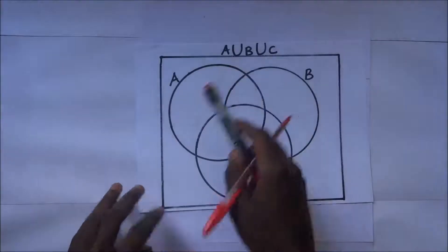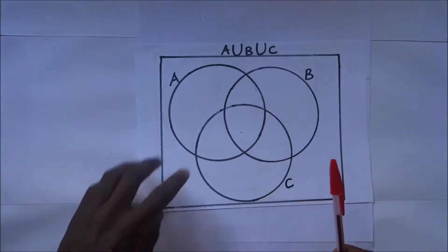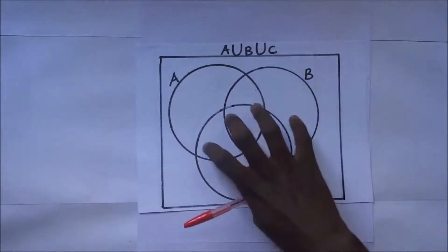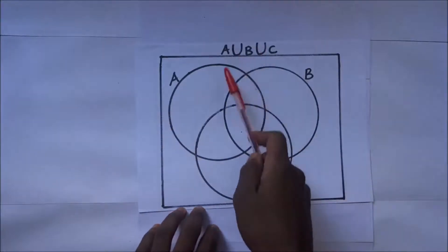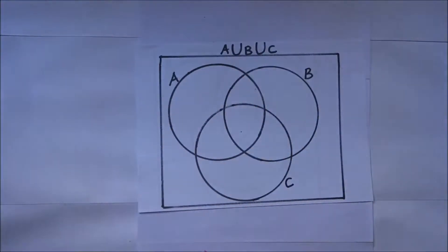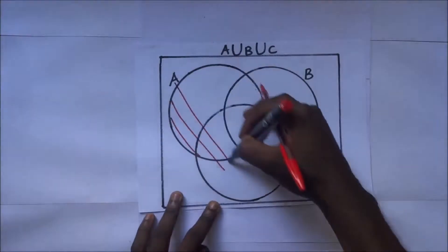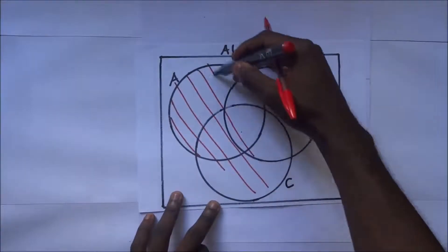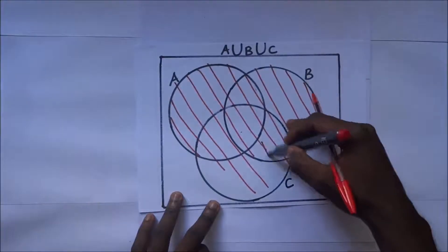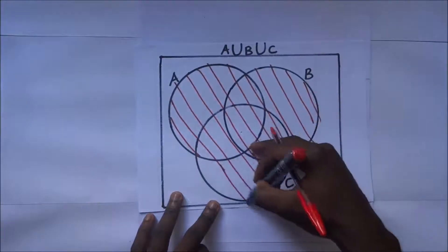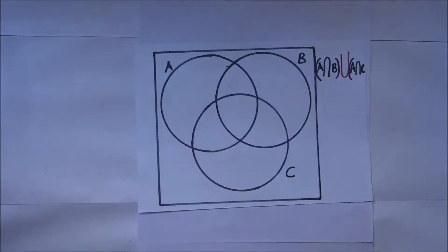A union B union C means that set A, set B, and set C are united. Union means you shade set A and set B and set C — all of them combined. That is A union B union C.